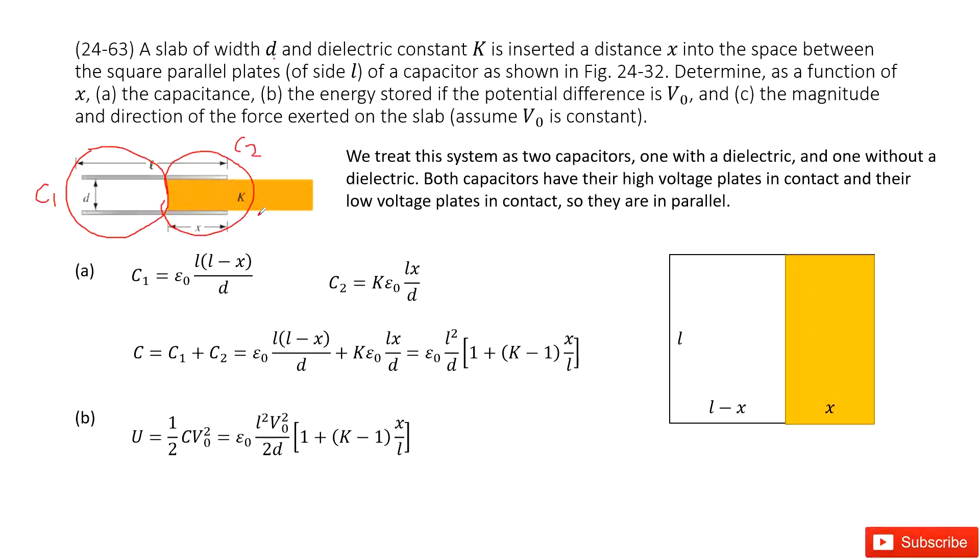Now if we want to find the equivalent capacitance for this system, it can be simplified as finding the equivalent capacitance for C1 and C2 in parallel connection. It is so simple. The equivalent capacitance C just equals C1 plus C2. Now we need to write the capacitance C1 and C2.